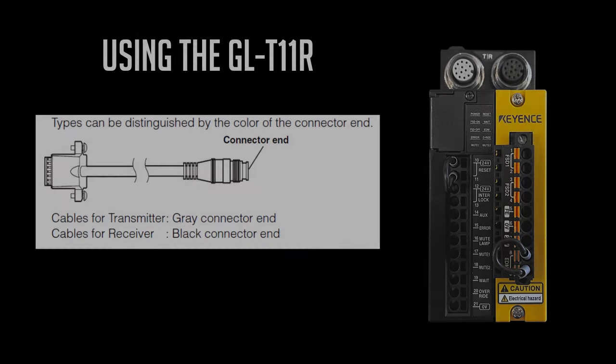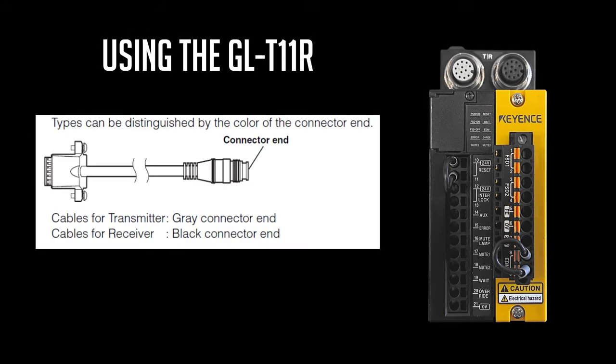In the case of using the GLT-11R dedicated safety relay, the transmitter cable will have a gray connector and the receiver cable will have a black connector. This can also be located on the top of the GLT-11R.